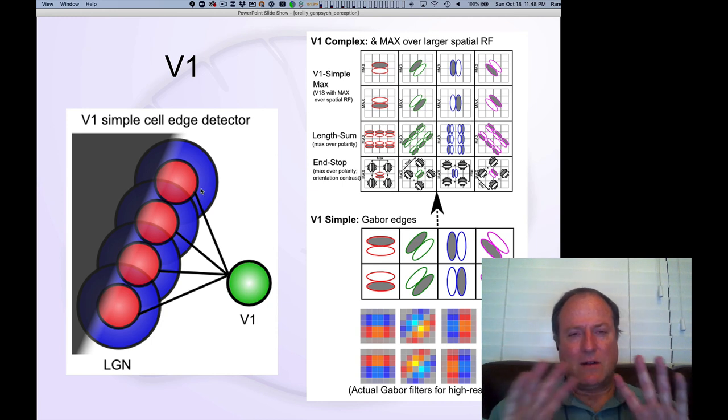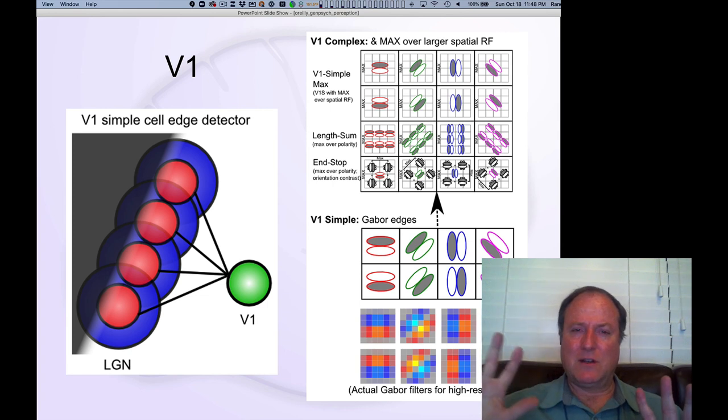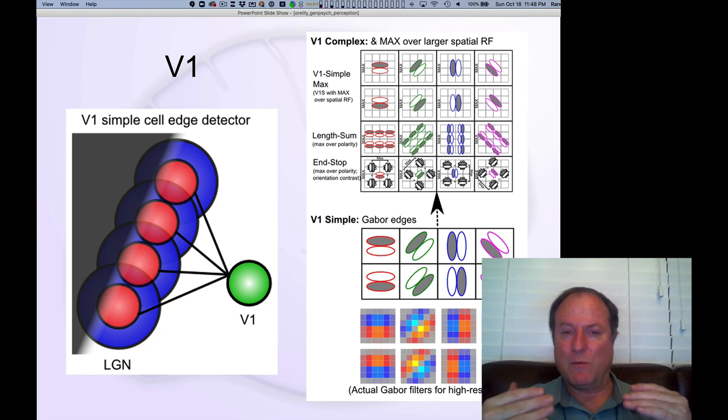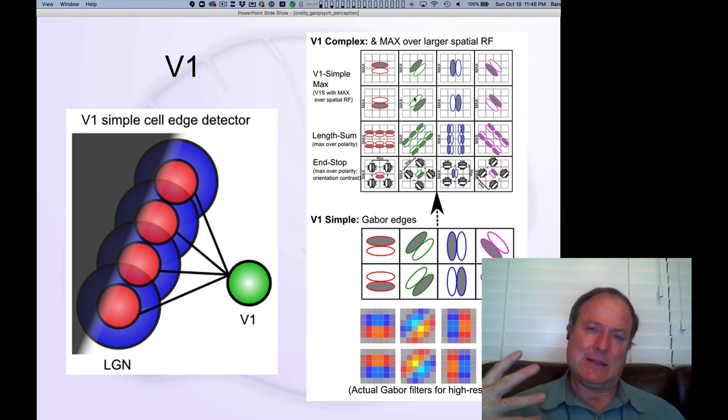You don't need to know this, but this is just when you go on in vision and perception, everybody talks about these V1 simple cells in terms of these Gabor functions, which are these little on-off contrast sensors. Then there's more complex end-stop and length-sum cells.